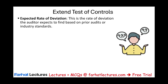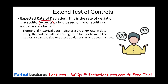Another factor is the expected rate of deviation — the rate the auditor expects to find based on prior audits or industry standards. For example, if historical data indicates a 1% error rate in data entry is typical, the auditor uses this figure to determine the necessary sample size to detect deviations at or above this rate.